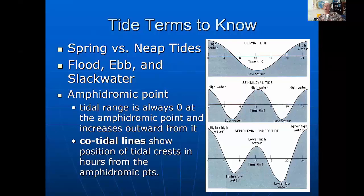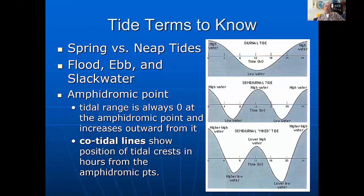In the center of the ocean there's no effective tide — it's called an amphodromic point. And essentially these currents, these tide waves, move and rotate around in a form of alternating crests and troughs known as cotidal lines.